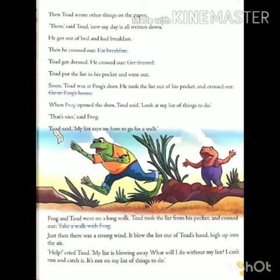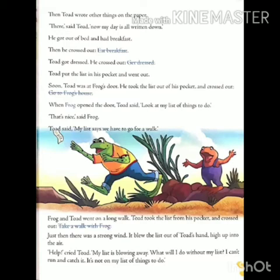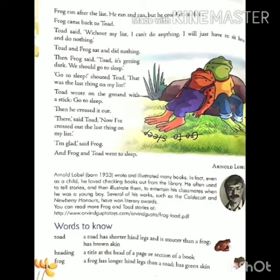Just then there was a strong wind. तभी वहाँ बहुत तेज़ हवा चली. It blew the list out of Todd's hand, high up into the air. वह सूची Todd के हाथ से उड़कर हवा में बहुत ही ऊपर चली गई. Help, cried Todd, my list is blowing away! मदद करो, Todd चिल्लाया, मेरी सूची उड़कर दूर चली गई. Frog ran after the list. He ran and ran but he could not catch it. Frog यानि मेंढक उस सूची के पीछे दौड़ा, वह दौड़ता रहा मगर सूची को पकड़ नहीं पाया.